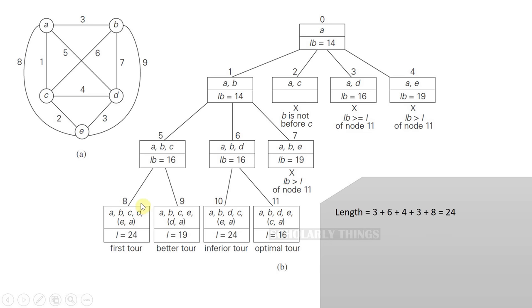At this stage, you should consider finishing the Hamiltonian circuit because you have visited 4 nodes. Then from the last node, you have to go back to the root. From node 5, that is after visiting A, B, C, if I visit D, then the next option for me is to visit E and then finally go back to A. In that case, the length of the tour will be 24. A, B, C, D, E and then A. That will be 3, 6, 4, 3, and then 8. Totally, the length is 24.